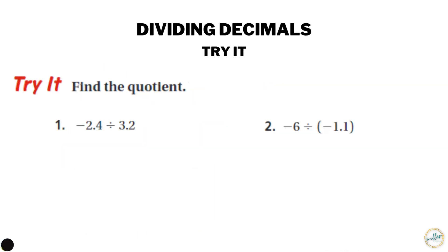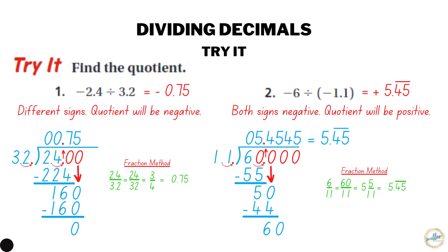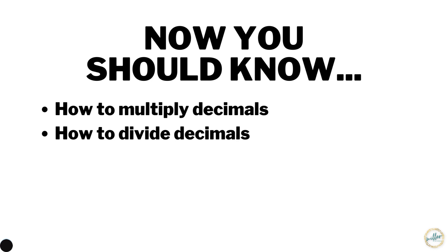Now it's time for you to try it. Pause the video and use either method to find the quotient of the practice problems. Here are the answers and the work for the try-it problems — pause the video to write everything down in your notes. Once you're done, play the video again and get started on your next assignment. Now you should know how to multiply decimals and how to divide decimals. Thanks for watching.